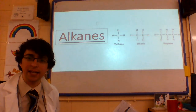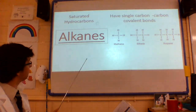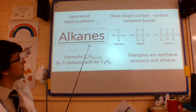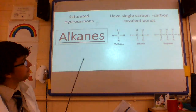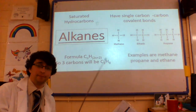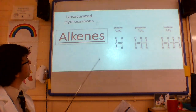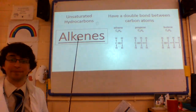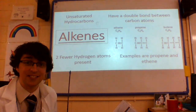Let's just go through that again, just so we're really happy. Alkanes are saturated hydrocarbons, have single carbon-carbon covalent bonds, are CnH2n plus 2, so examples are methane and ethane. Alkenes are unsaturated hydrocarbons.